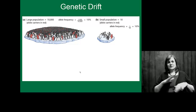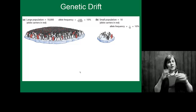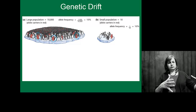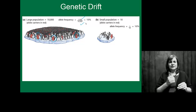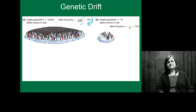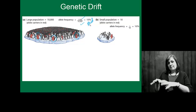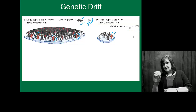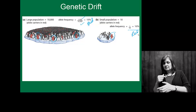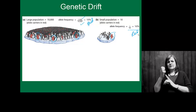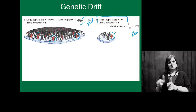I've got penguins on an iceberg. I want to focus on the red penguin. In this large population, I have 1,000 red penguins and 10,000 total penguins, meaning 10% of my penguins are red. In my small population of 10 individuals total, 1 individual is red — still 10% of my population. Which one of these do you think would be more affected by environmental factors or sudden changes? This small population.